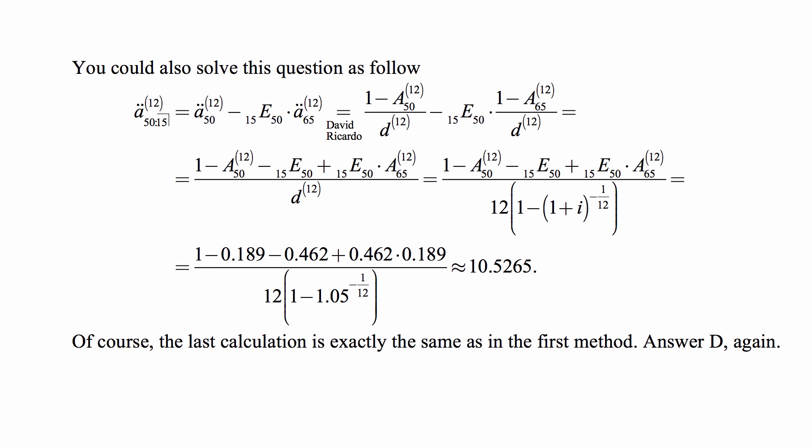But now you have to use the David Ricardo formula twice to get the A double dot. So we just plug it in, basically use David Ricardo just like before. Notice that those two things have a common denominator of D upper 12. So we combine the terms and we get what you see. And then we write D upper 12 in terms of i. And this actually becomes exactly the same calculation as what we just did a moment ago. And it's 10.5265.